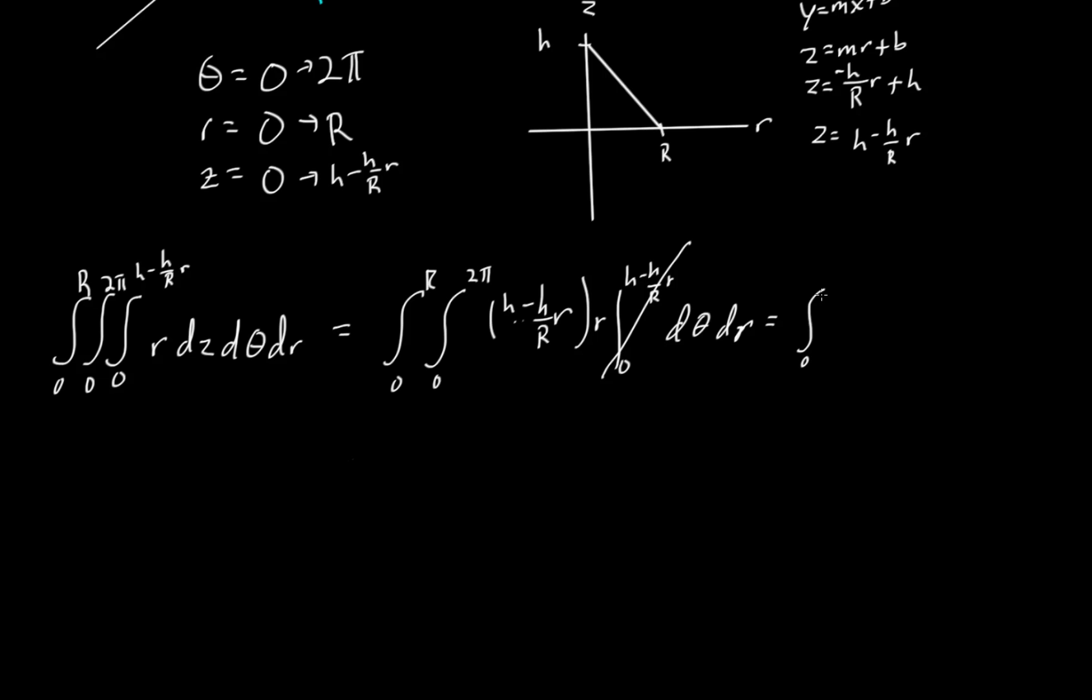So we have integral from 0 to capital R, integral from 0 to 2 pi, of r times h minus h over capital R times r, d theta dr. So let's evaluate that. Now we're going to get integral from 0 to capital R of 2 pi times r times h minus h over capital R times r, where theta will be evaluated from 0 to 2 pi, dr. Once again, there's no theta inside this expression here, so it doesn't matter. We don't have to evaluate it, we can't, so it's a constant.